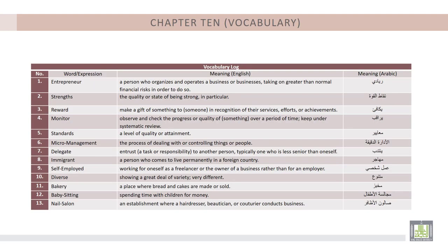The vocabulary log of this chapter includes: 1. Entrepreneur, 2. Strengths, 3. Reward, 4. Monitor, 5. Standards, 6. Micromanagement, 7. Delegate, 8. Immigrant, 9. Self-employed, 10. Diverse, 11. Bakery, 12. Babysitting, 13. Nail Salon.